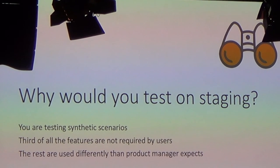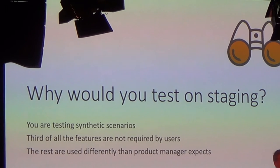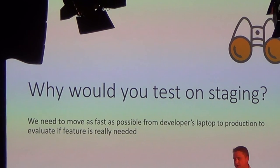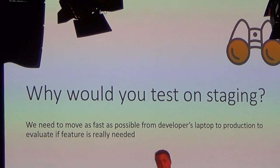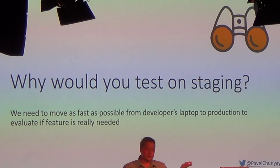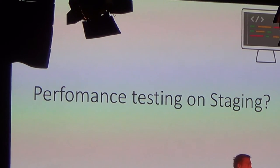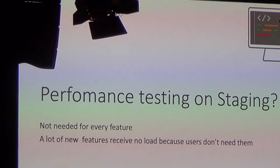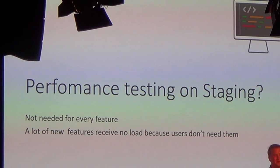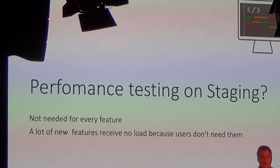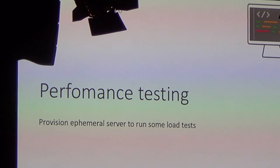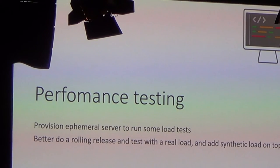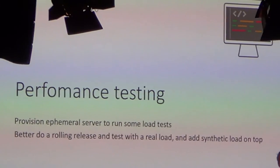Statistics shows that a third of all features are not needed by users, and those that are needed are used differently than people thought they would be. So what you really need is a way to quickly put your features from the developer's laptop to production, so you can validate whether this is what users really need or not. For performance testing, I don't think it's needed for every feature. But if you want to do performance testing, why not use immutable infrastructure — create an environment just for that specific case, run the performance testing, and then destroy it. Or maybe even better, create a rolling release and put subsets of your users to test this for you.